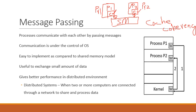Message passing scheme gives better performance in a distributed computing environment. A distributed system is one where two or more computers are connected through a network to share and process data. In this environment, there is a Cache Coherency Problem that may occur if we implement the shared memory model. Hence, message passing gives better performance because when messages are exchanged using the message passing scheme, there is no Cache Coherency Problem, since there is no shared memory region and data is not stored in between.